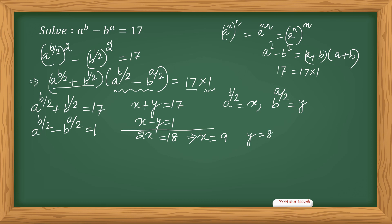So what is x? x equals a^(b/2). That will be 9. So a^(b/2) equals 9. Now squaring both sides, I will get a^b equals 81. And here, if I take the square, I will get b^a equals 64.